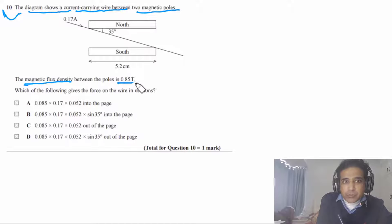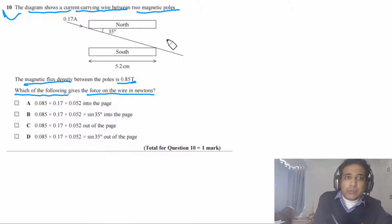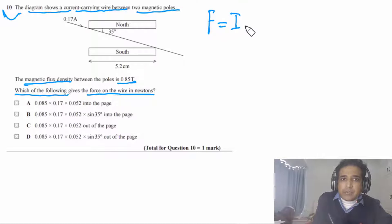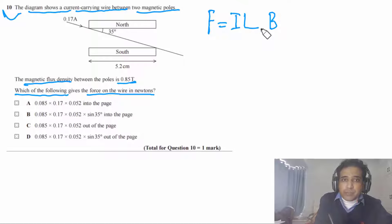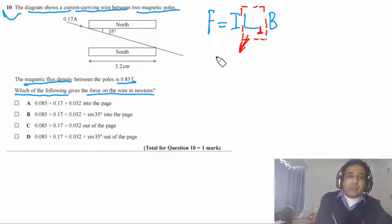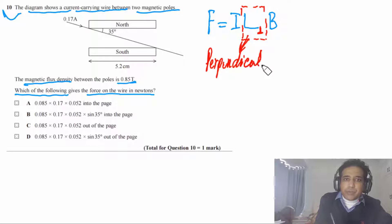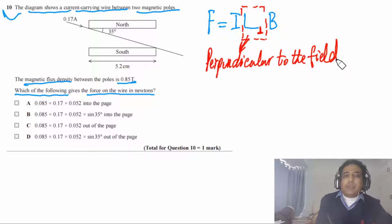Question 10: a current-carrying wire is between two magnetic poles with flux density 0.85 T. The force on the wire is F = BIL, where L is the length of the wire perpendicular to the field. This is the critical point: we must take only the component of the wire perpendicular to the magnetic field.